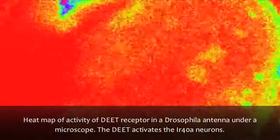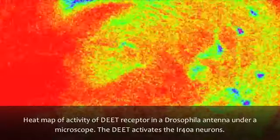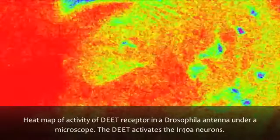One of the most exciting things is that the DEET receptor protein, this receptor called IR-40A, is highly conserved across several insect species, and these receptors are very well conserved in some agricultural pest insects as well.